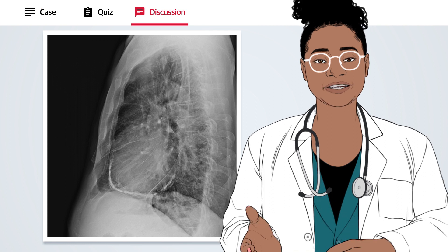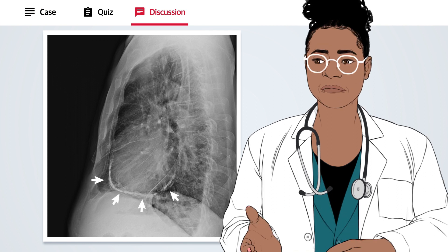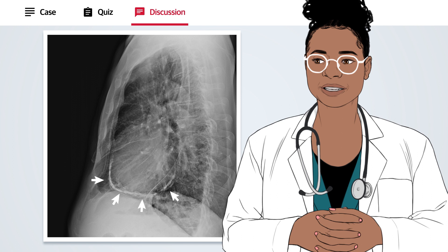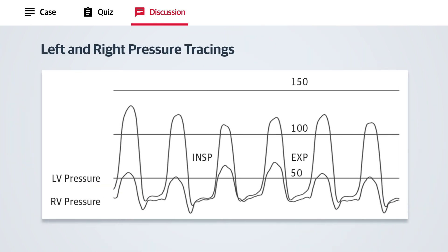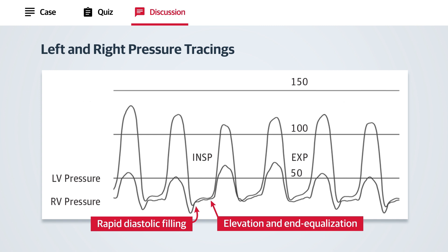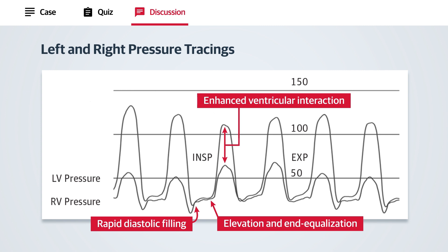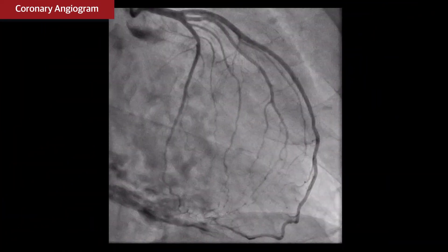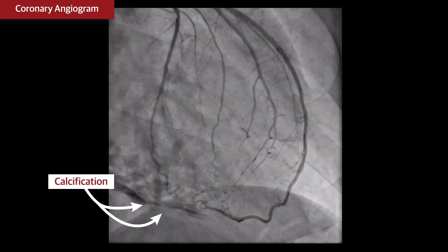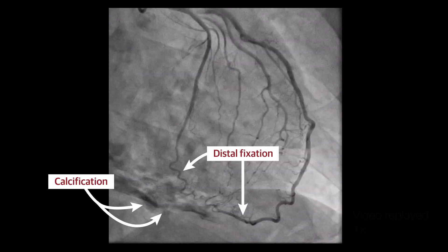Careful observers would have already noted the pericardial calcification on lateral chest X-ray. Cardiac catheterization is often required for definitive diagnosis of constrictive pericarditis. Pressure tracings showed early rapid filling, elevation and equalization of left and right ventricular diastolic pressures, as well as enhanced ventricular interaction. This coronary angiogram provided additional findings of dense pericardial calcification and distal fixation of the coronary arteries.